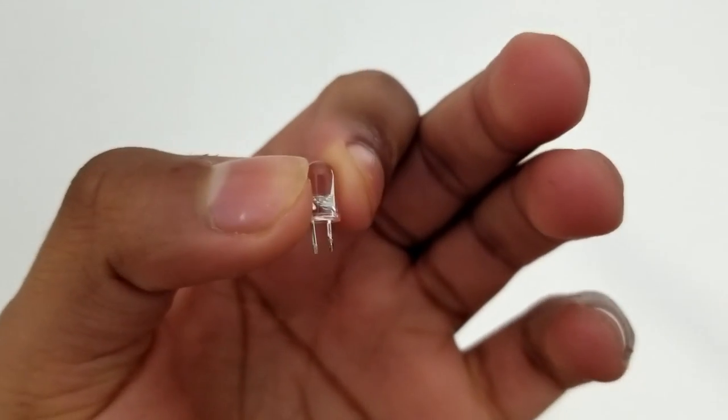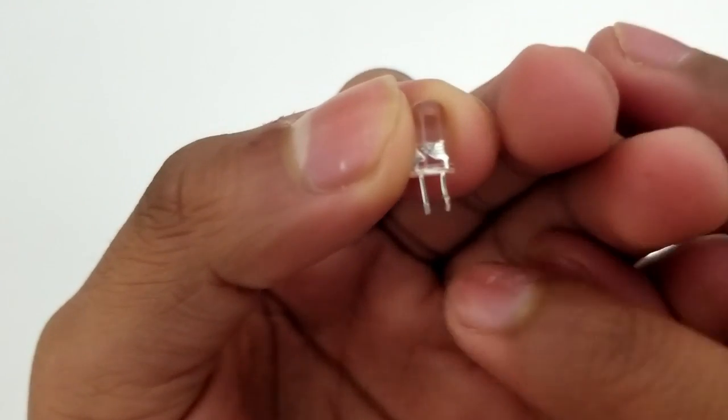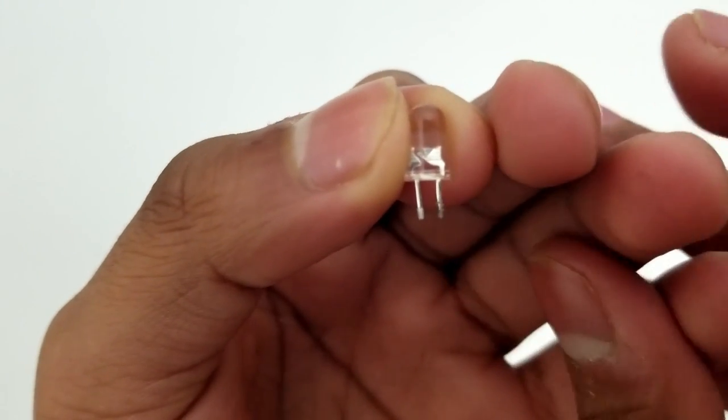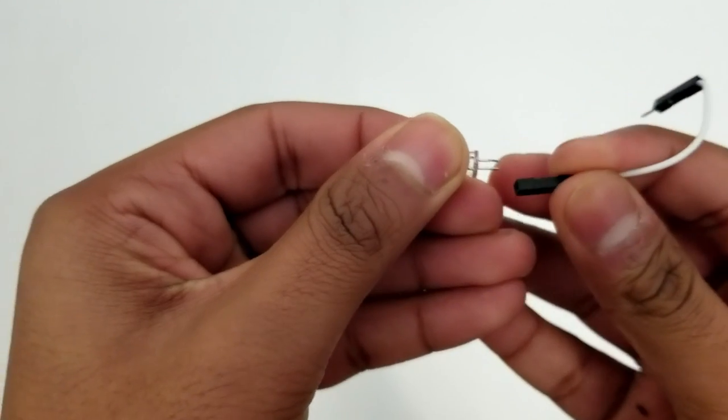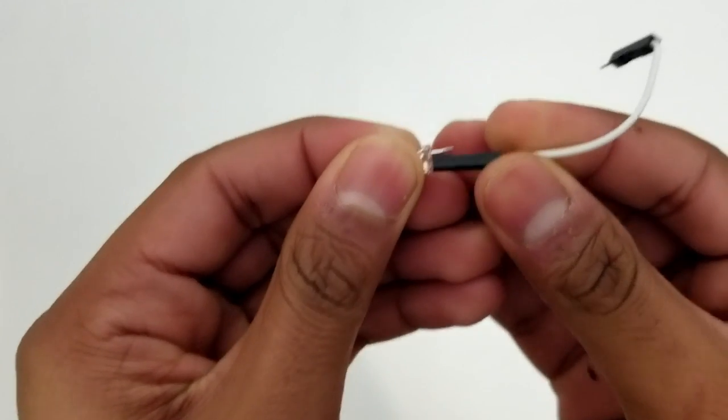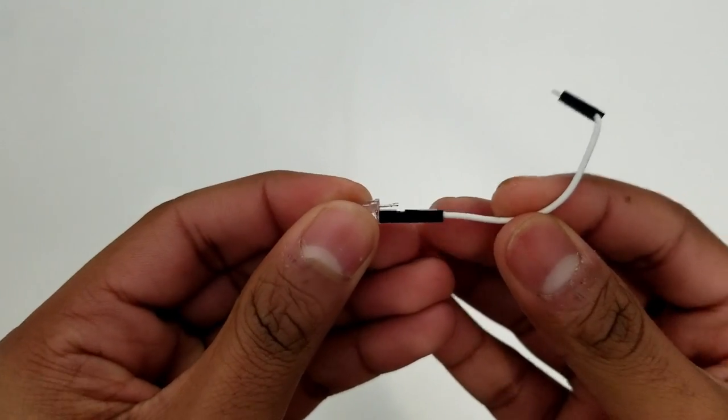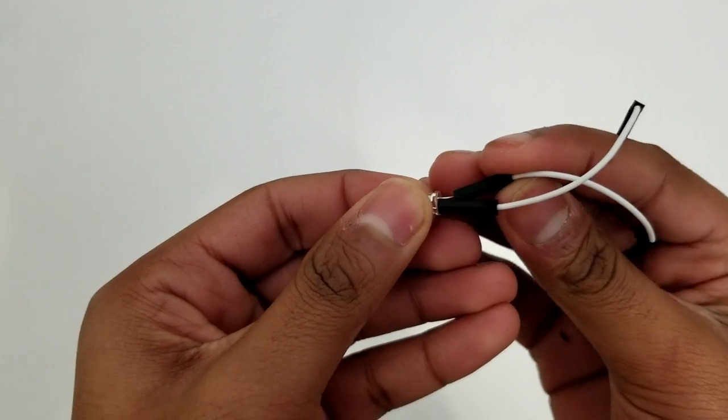Put your flashlight aside and get one of the LEDs and snip the legs so the leg that was originally longer stays longer and the leg that was originally shorter stays shorter. Now take both of the white wires. Connect one end of the solid white wire into the long end of the LED and the white black wire to the short end of the LED.